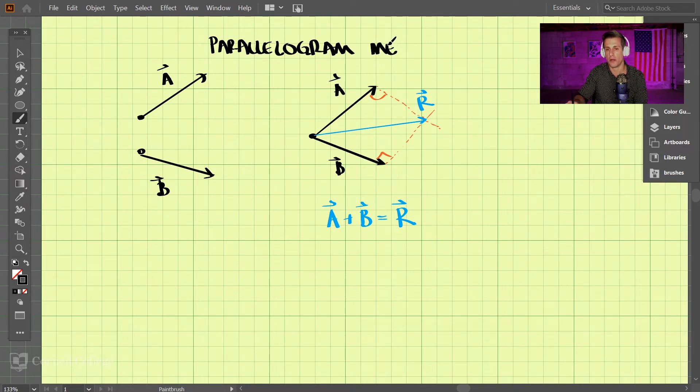So the parallelogram method. So recapping that, we put the tails together, we draw perpendicular lines from each of those vectors, and where they intersect will be our resultant vector or the addition of those two vectors.